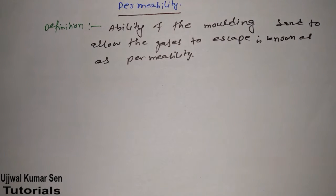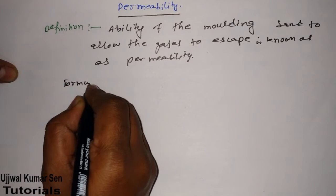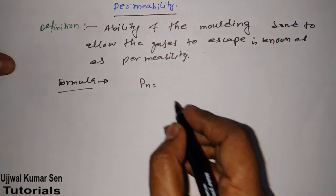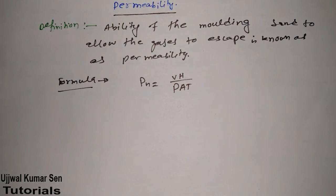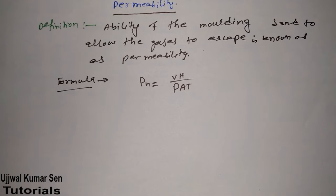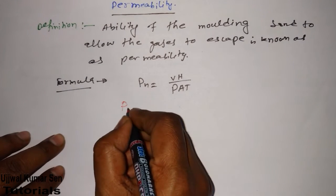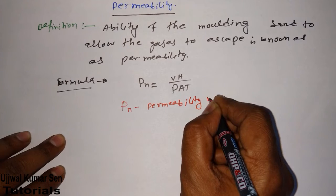In this video tutorial, I am going to share a question that has been asked in a GATE previous year paper. The main key for GATE is numerical problems. Here is the formula for finding the permeability number: PN = VH / PAT. Let me explain each variable one by one. PN means permeability number.